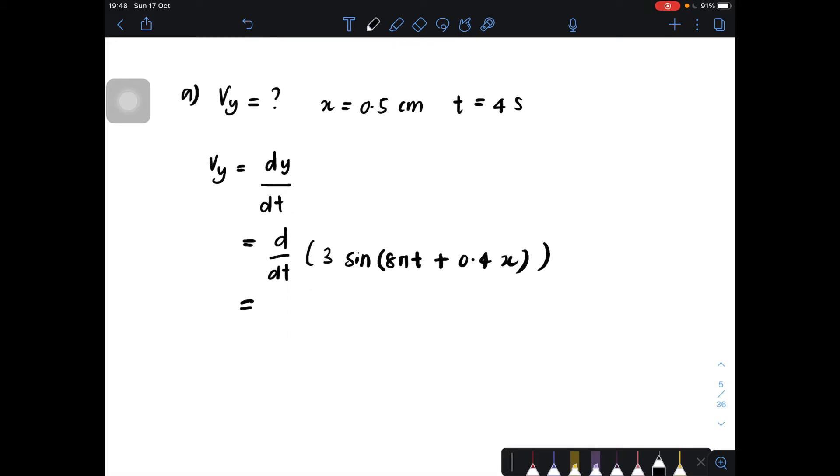So we will differentiate 3 sin 8π t plus 0.4 x. Okay, so since we differentiate it in terms of t, so this one will remain the same.